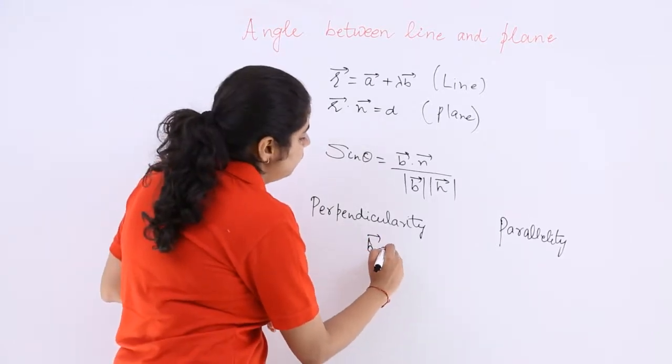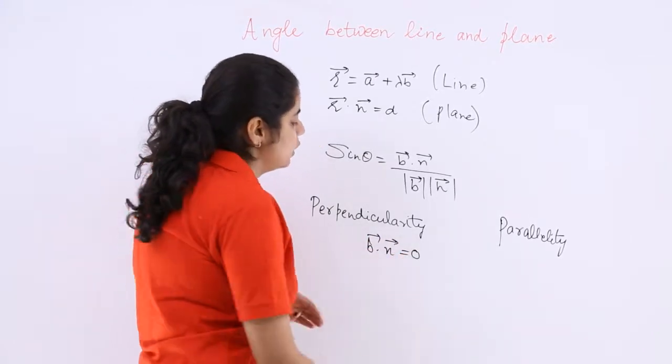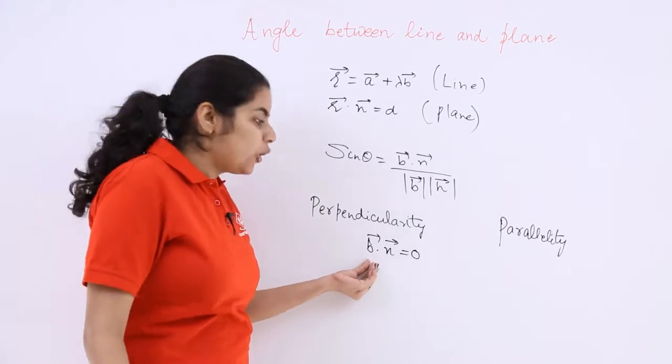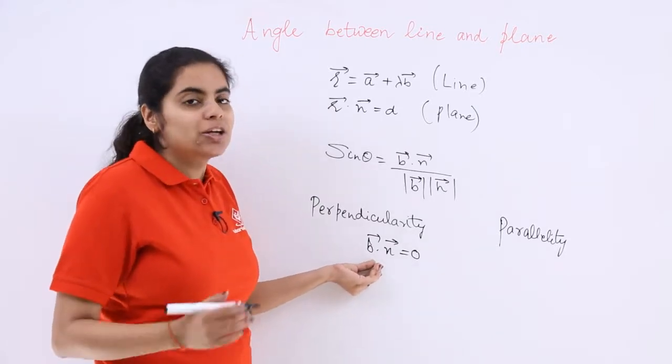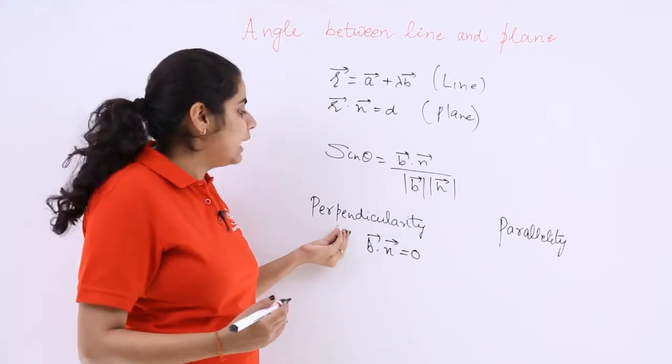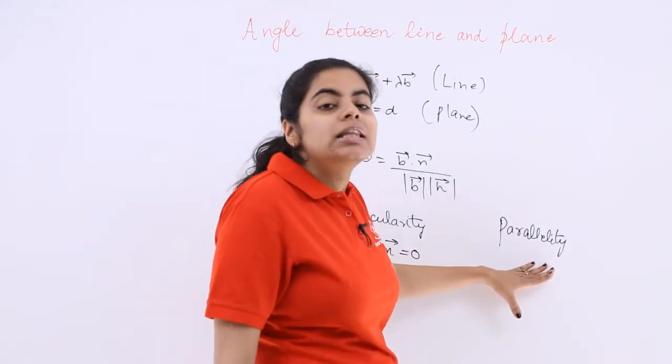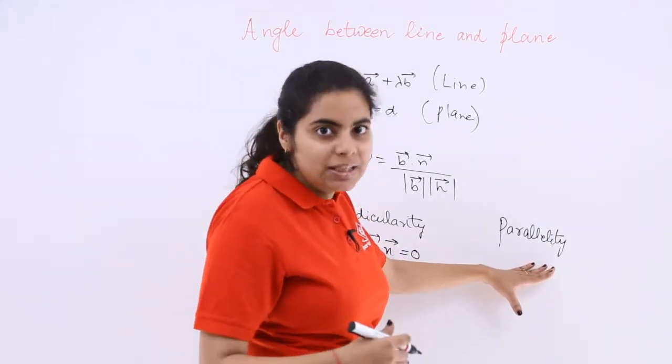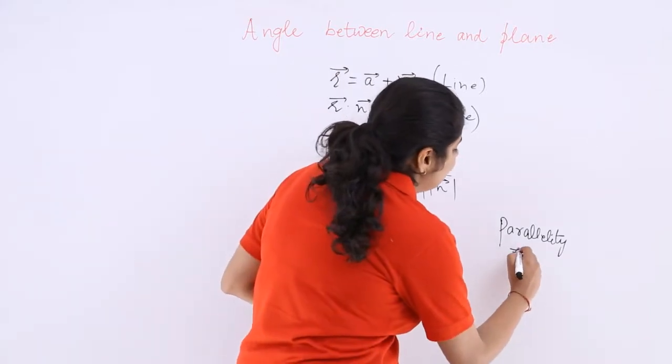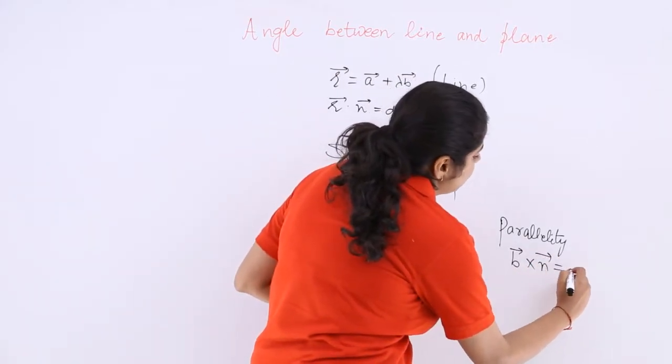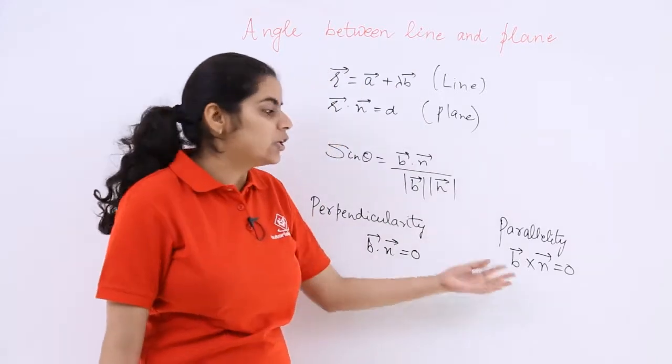B vector dot n vector equals 0 because dot product comprises of cos and cos 90 is 0. So 90 degrees is perpendicularity. Parallelity means sin theta should be 0 means theta should be 0. So b vector cross n vector equals 0. These are the two conditions.